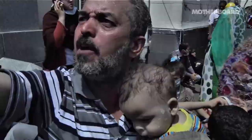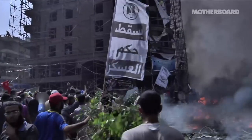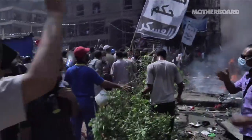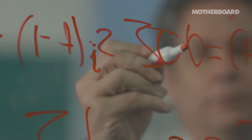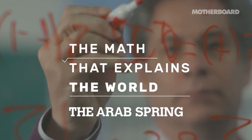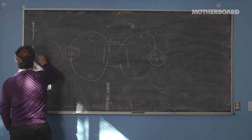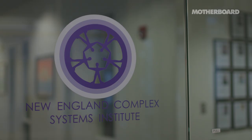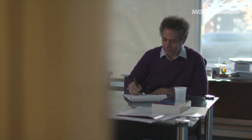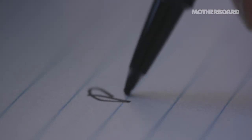When big things happen in the world, like the Arab Spring, how do we understand what is happening and why it's happening? I am Professor Yanir Baryam, President of the New England Complex Systems Institute. We study complex systems, which really means anything that has dependencies in it.